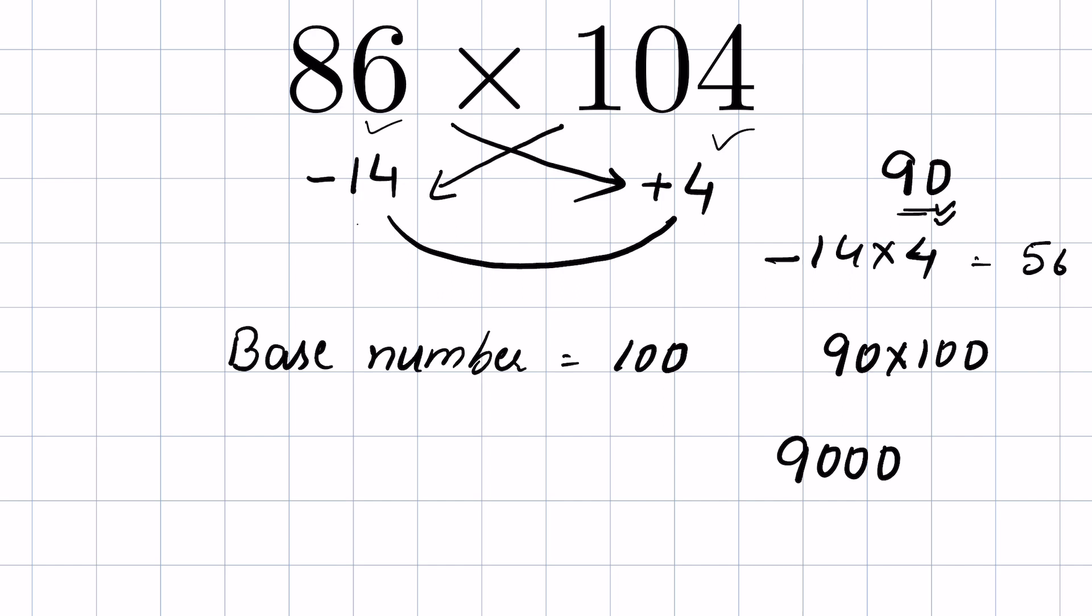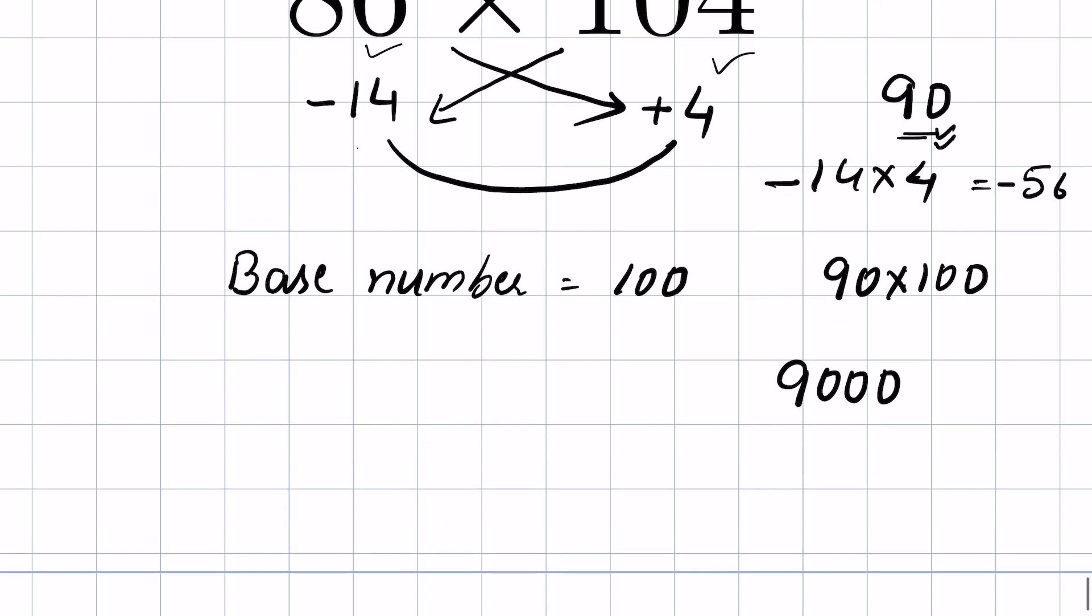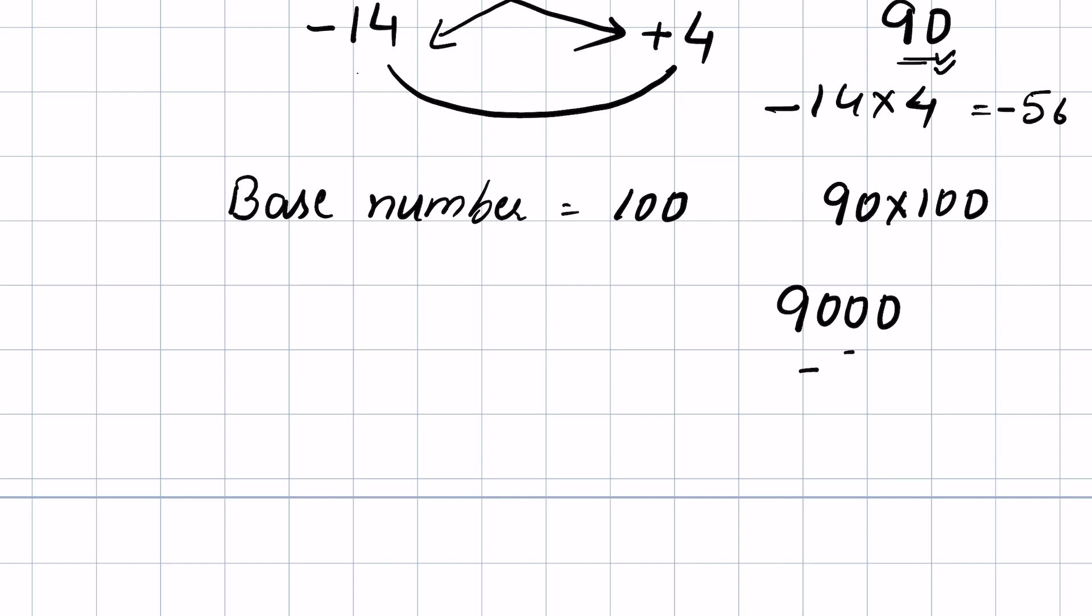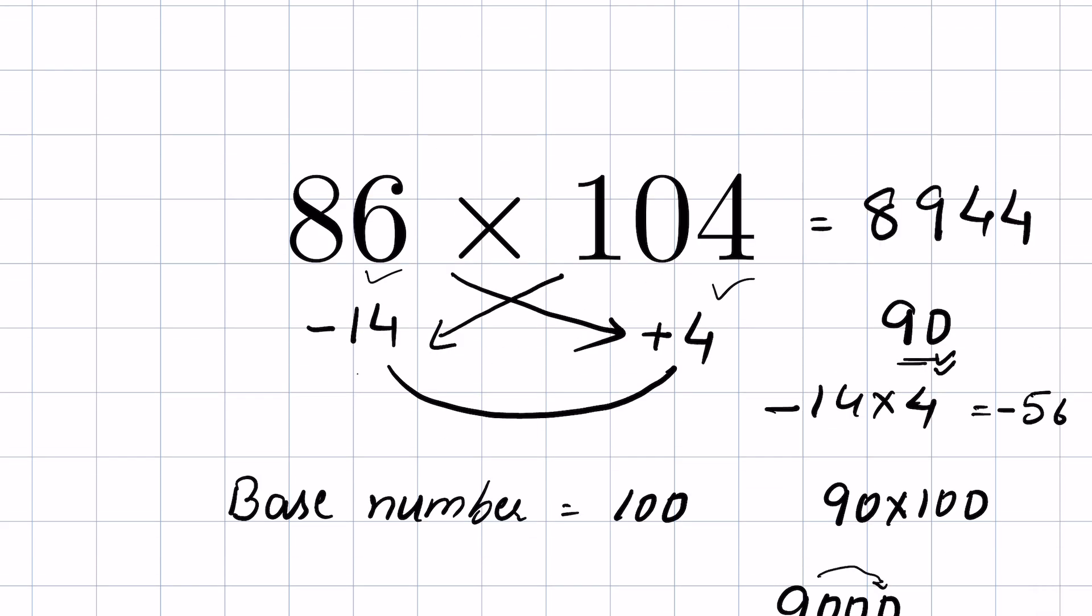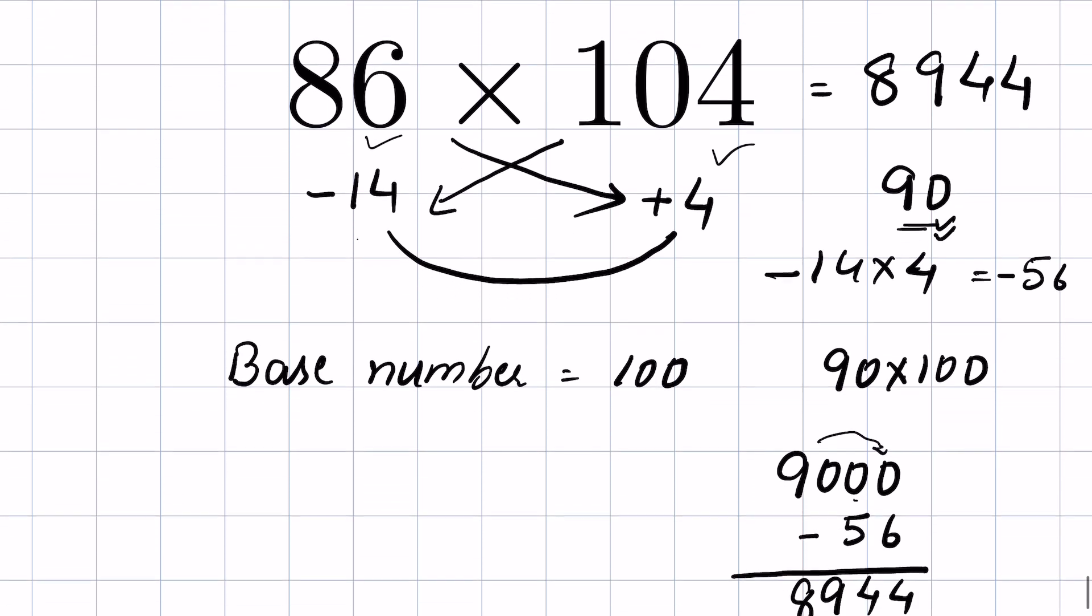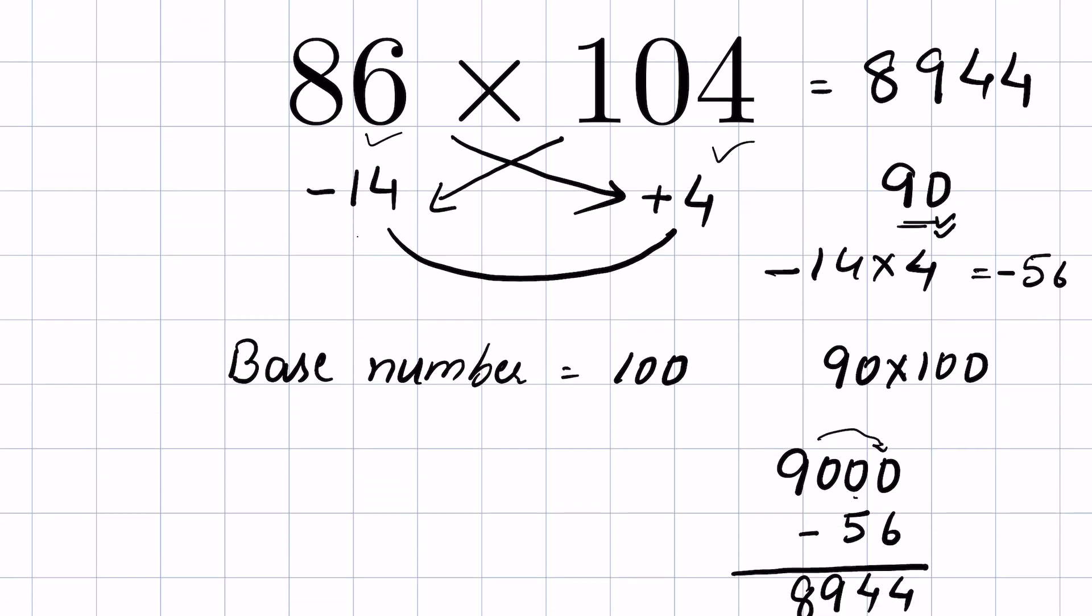This is minus 56, so we'll subtract 56 from 9000. So the answer is 8944. If you practice this method, you can do it in your mind without using pen or paper. Like and subscribe, thanks for watching.